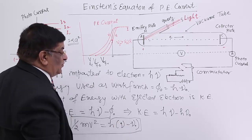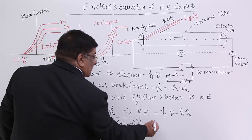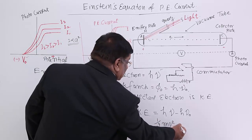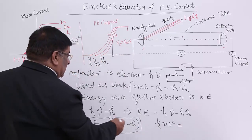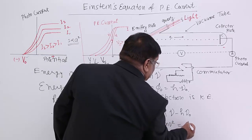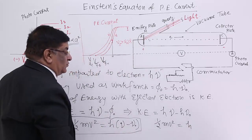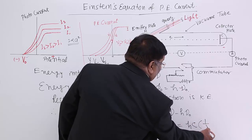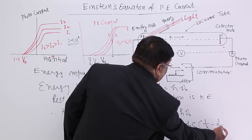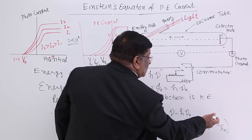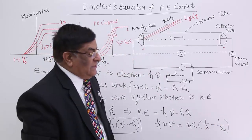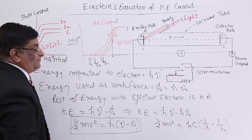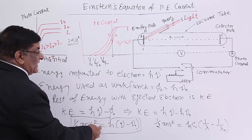If we want, we can convert it into wavelength. Our formula will be: half mv squared for the photoelectron is equal to H times C upon lambda. So we can write it as H C times (1 upon lambda minus 1 upon lambda not). Lambda not is the threshold wavelength, and lambda is the wavelength which is supplied. This is Einstein's equation in terms of wavelength.